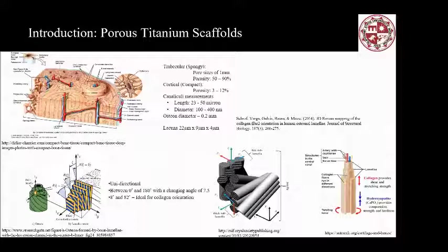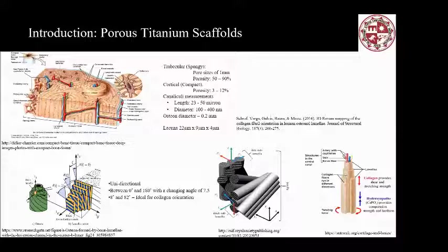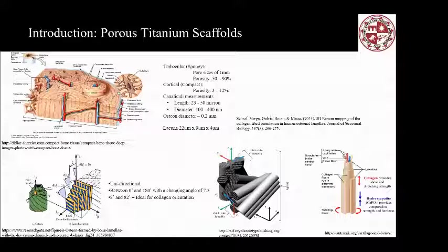The measurements show structures around 23 to 50 micron diameters, with features around 100 to 400 nanometers. You can see the geometry structure for the unidirectional bone. Our work is trying to mimic the bone structure — creating better porosity while maintaining mechanical strength, so the scaffold can achieve the same standards as human bone using metal 3D printing technology.